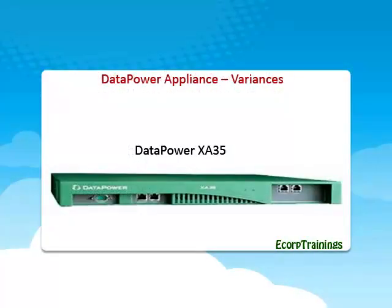Coming to Data Power Appliance variances: Data Power XA35 is the entry-level product and represents the beginning product of the Data Power company. It has a highly efficient XML processing engine with limited security processing functionality. It provides XML threat protection, encryption, and digital signature capabilities, and has full SSL and SNMP capabilities to fit into the network architecture. It sits behind the demilitarized zone.